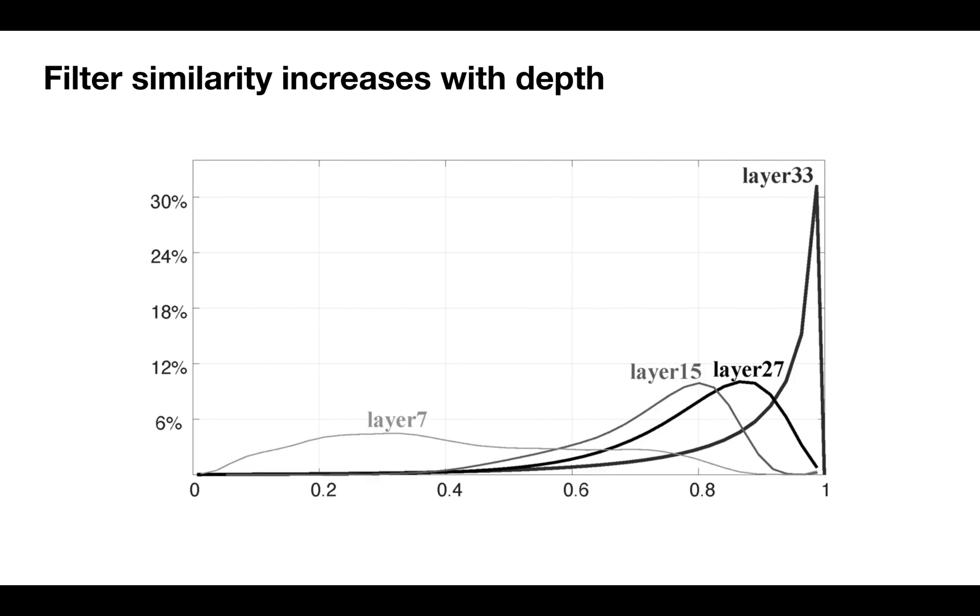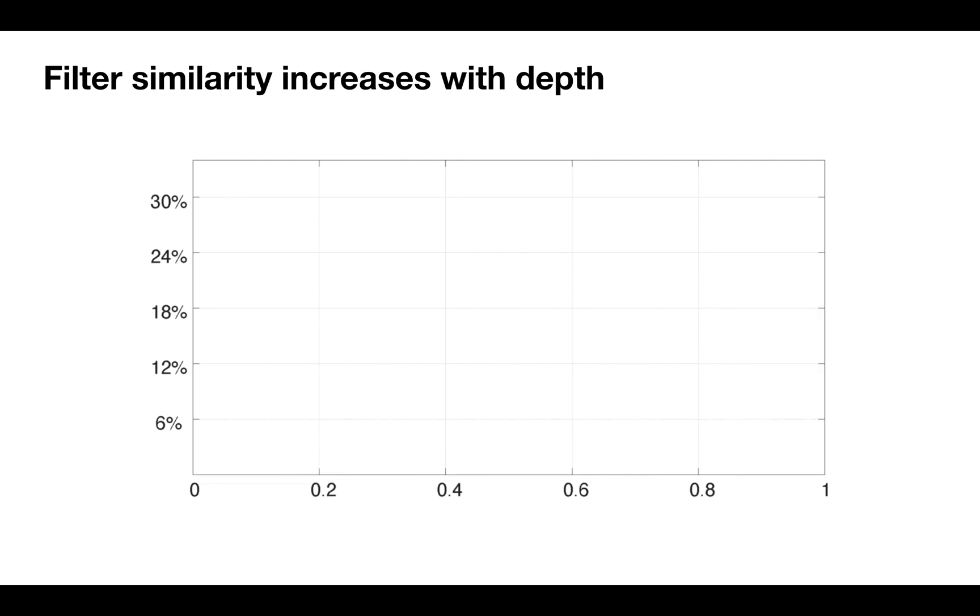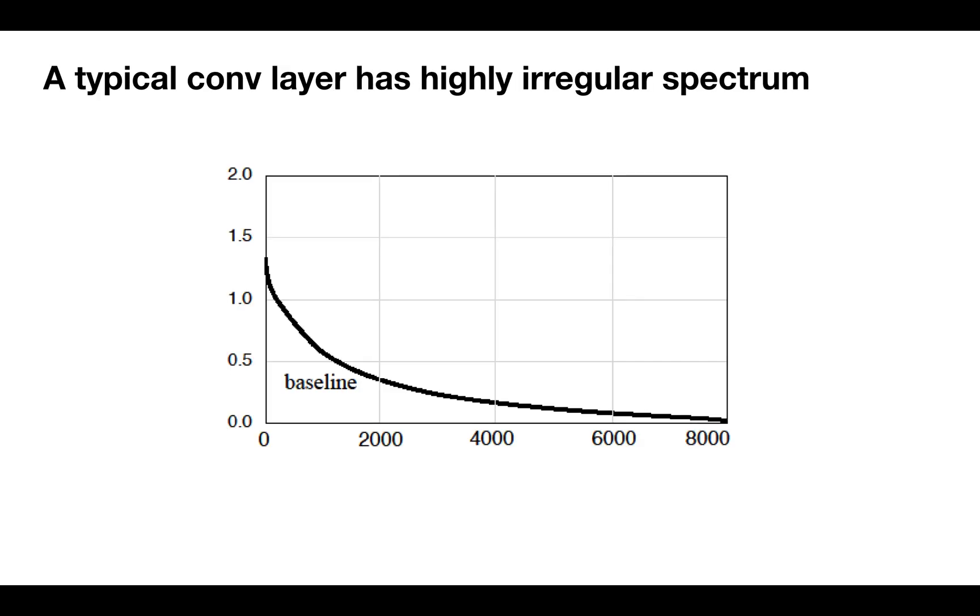Empirically, we observe the filter similarity in higher layers is much stronger than in the lower layers. Our hypothesis is that this is partially caused by the highly irregular spectrum of a typical convolutional layer.